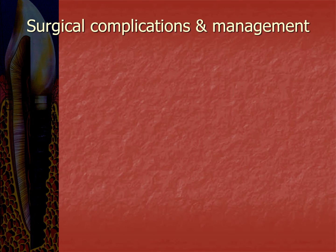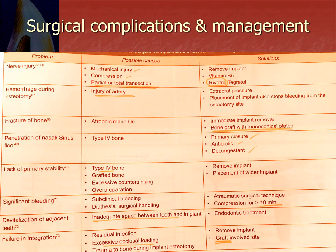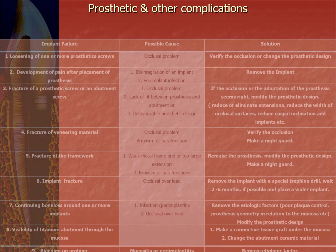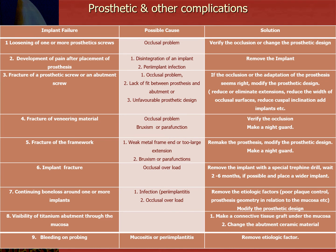Coming to surgical complications and management, a table explains different surgical complications including nerve injury, hemorrhage during osteotomy, fracture of the bone, penetration of the nasal or sinus floor, lack of primary stability, significant bleeding, devitalization of adjacent teeth, and failure of osseointegration — with possible causes and solutions for each. Prosthetic and other complications include loosening of prosthetic screws, development of pain after implant placement, fracture of a prosthetic or abutment screw, veneer debonding, fracture of the framework or implant, continuing bone loss around implants, visibility of the titanium abutment through the mucosa, and bleeding on probing — with possible causes and solutions listed in the chart.